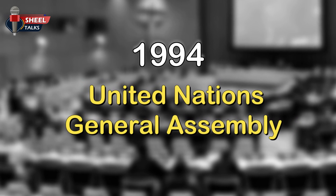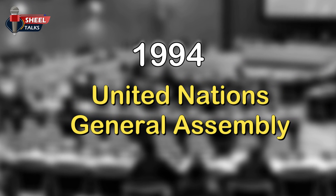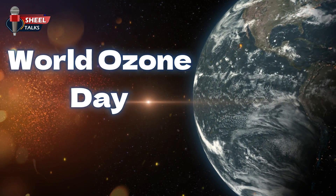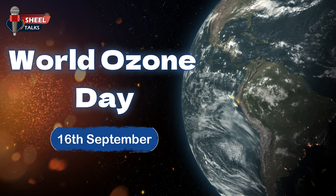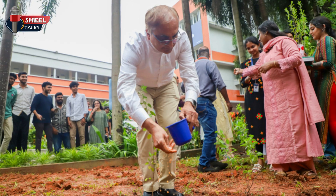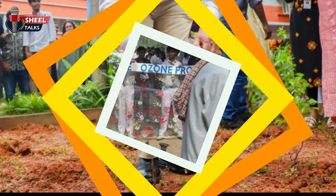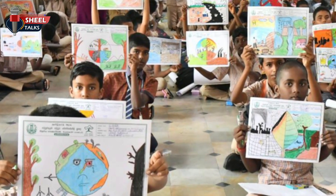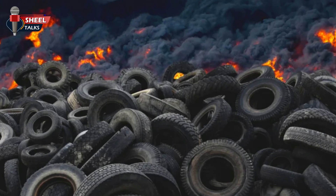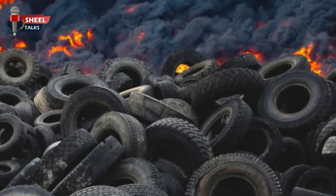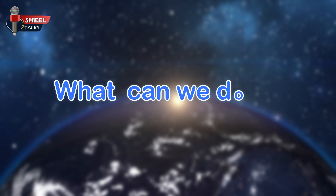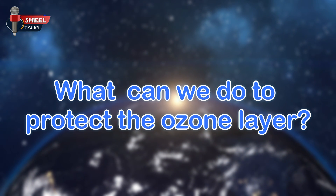Additionally, in 1994, the United Nations General Assembly declared September 16th as World Ozone Day. Since then, World Ozone Day has been observed annually on September 16th, and various events are held worldwide to raise awareness about the ozone layer and emphasize its importance for our lives, encouraging people to avoid activities, equipment, or materials that harm the ozone layer. Now let's discuss what we can do to protect the ozone layer.